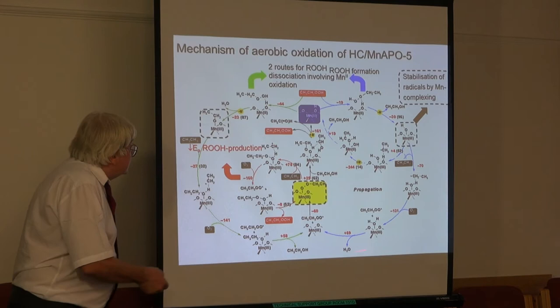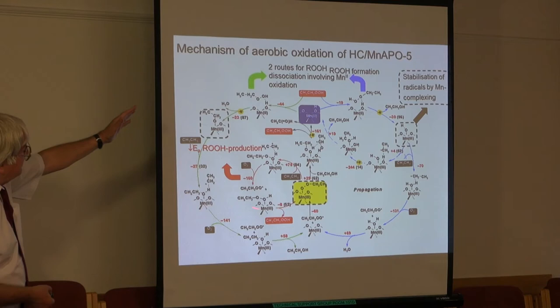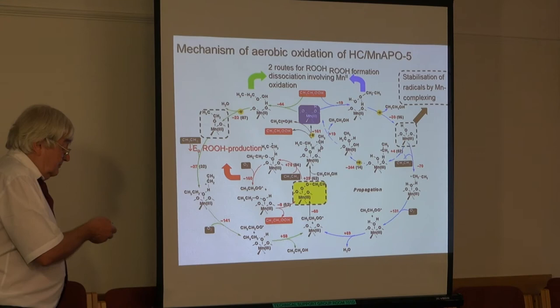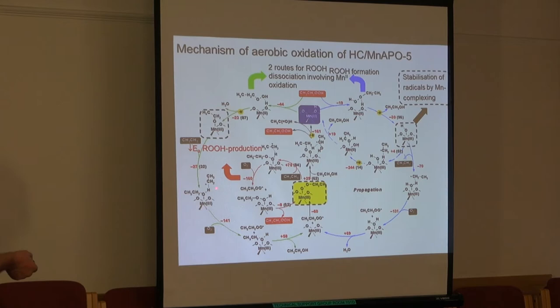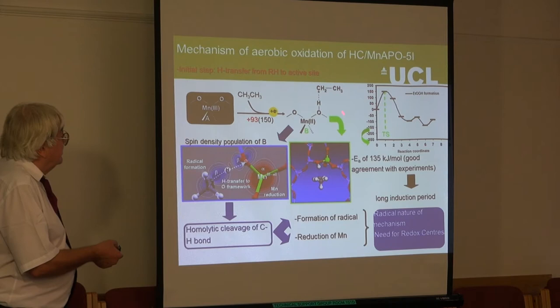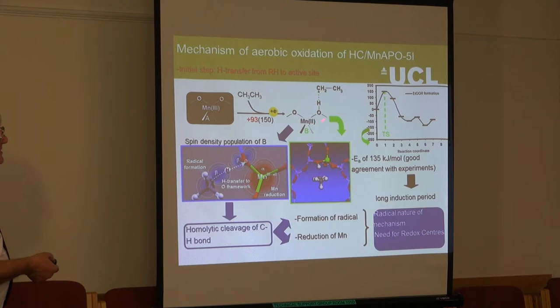Luis Gomez used these calculations to piece together a very detailed catalytic cycle that gives the products observed experimentally. This work was published earlier this year. I think it demonstrates how computational chemistry techniques can now help you understand complex catalytic processes. The key point is that at the heart of this catalytic process there is this defect species — that's what gets the whole lot going.